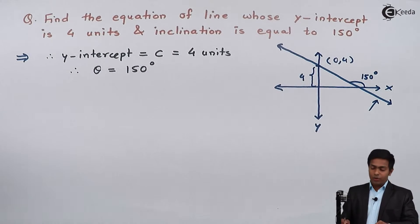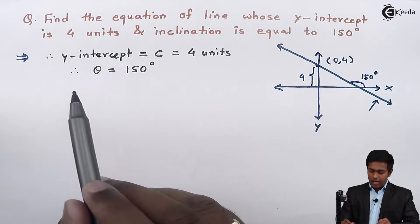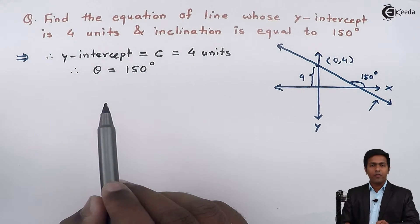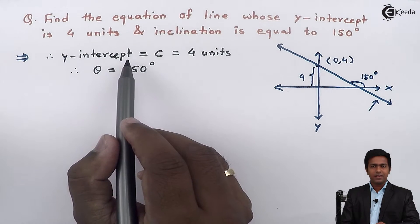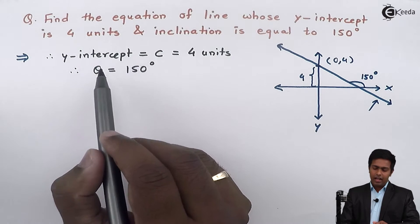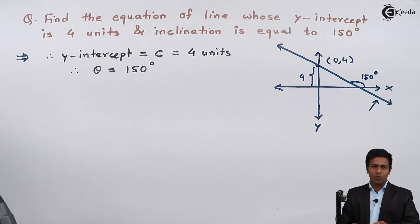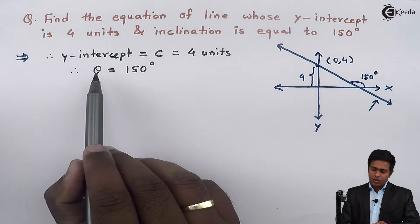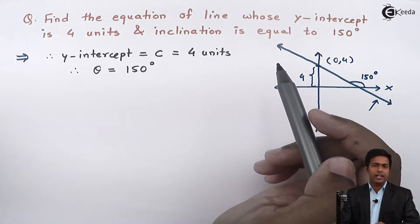Now to find out the equation of line, I will use slope-intercept form because I've been given y-intercept. So I can use this intercept, and I've been given theta. So from theta I can find out the slope. So slope-intercept form can give me the equation of required line.